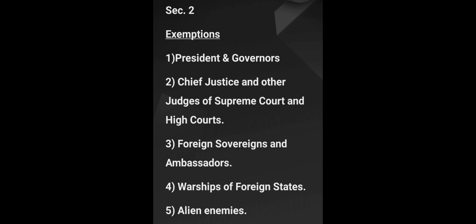There are five categories of persons who are exempted from the jurisdiction of IPC: number one, the President of India and the Governors of States; number two, the Chief Justice and other judges of the Supreme Court and High Courts; number three, foreign sovereigns and ambassadors; number four, warships of foreign states; and number five, alien enemies. These five categories of persons are exempted from the jurisdiction of IPC and require special procedures for their trial.